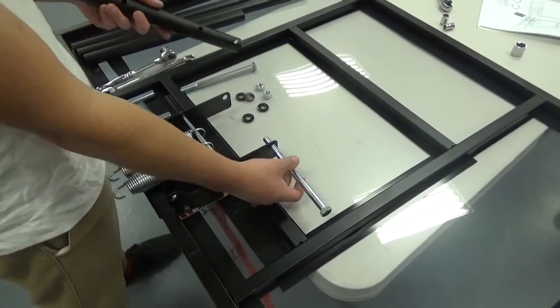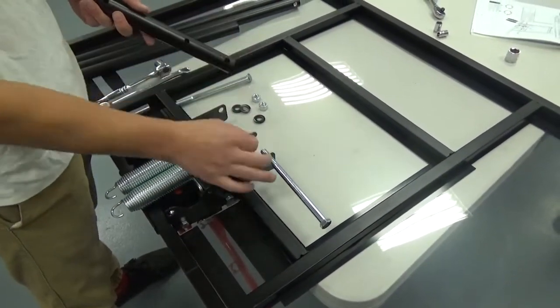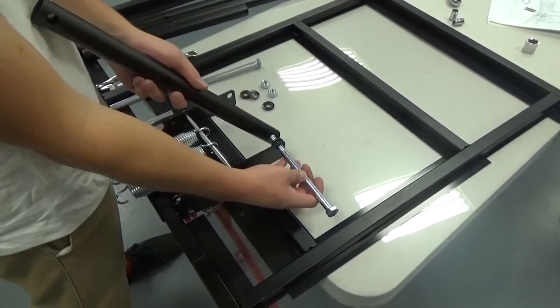Attach the short extension arms to the backboard brackets. Make sure you have the extension arms oriented correctly before securing the hardware.